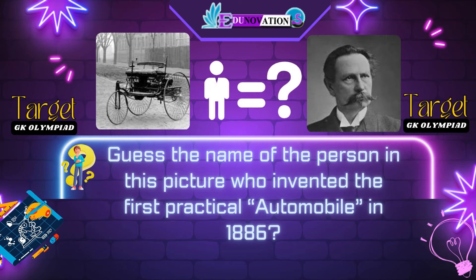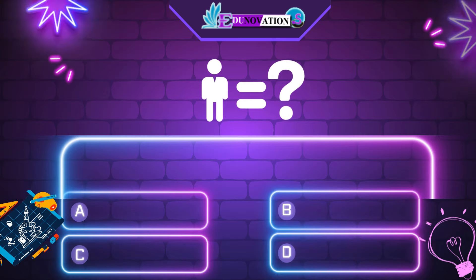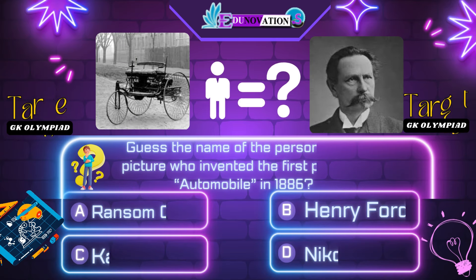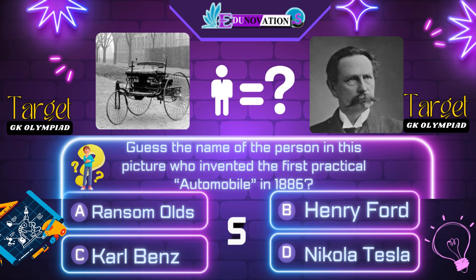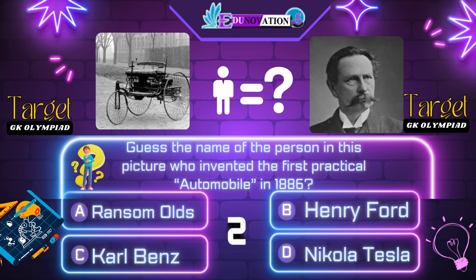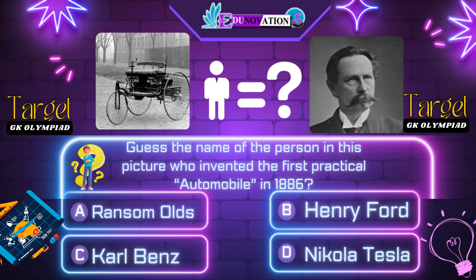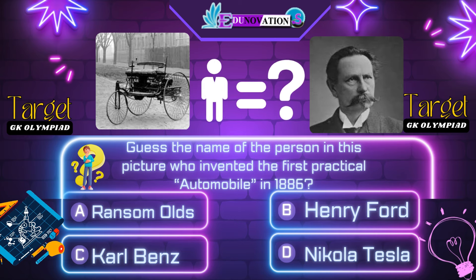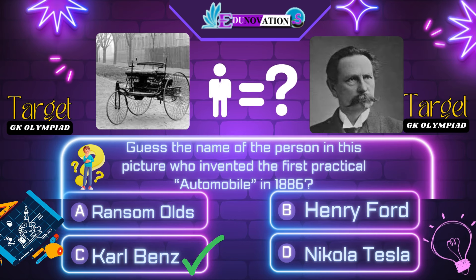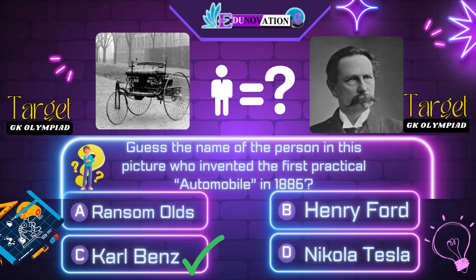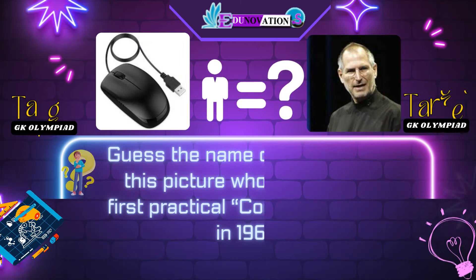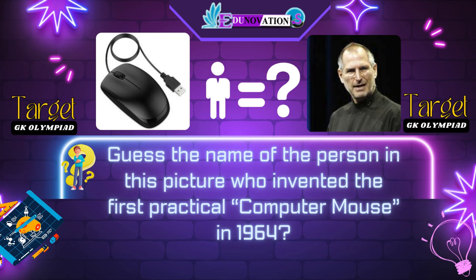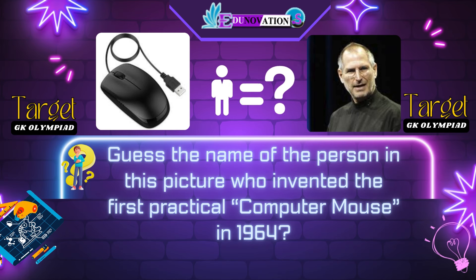Next question. Guess the name of the person in this picture who invented the first practical automobile in 1886. Your options are: A. Ransom Olds, B. Henry Ford, C. Carl Benz, D. Nikola Tesla. Time's up. Correct answer is C. Carl Benz.